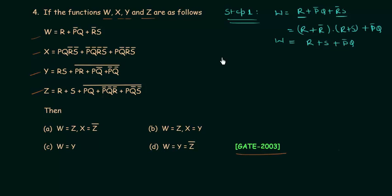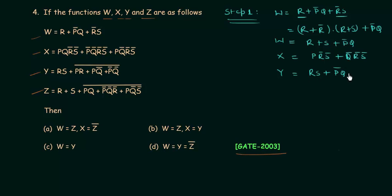Similarly, minimizing X gives X = PR'S complement or Q complement — wait, X equals P, R complement and Q. Minimizing Y gives Y = RS or P'Q or QR'. Minimizing Z gives Z = R or S or P'Q.